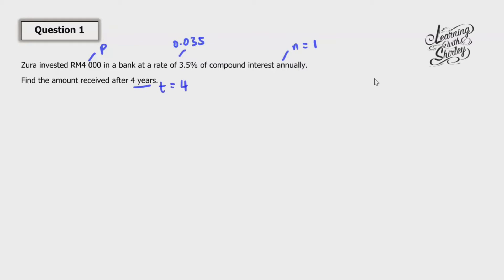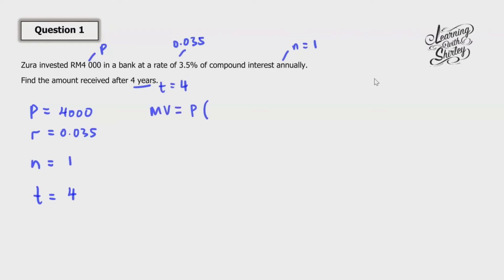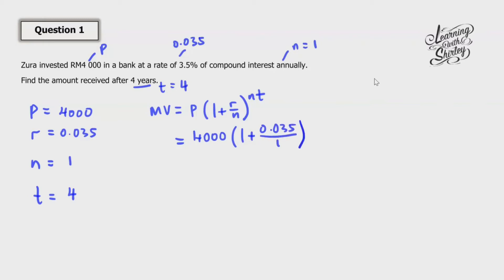So we extract the information: P is 4000, R is 0.035, N is 1 because it's annually, and T is 4 because it's after 4 years. We're going to use the formula MV = P(1 + r/n)^(nt), substituting in all the given values: P is 4000, then 1 plus 0.035 over 1, to the power of 1 times 4.